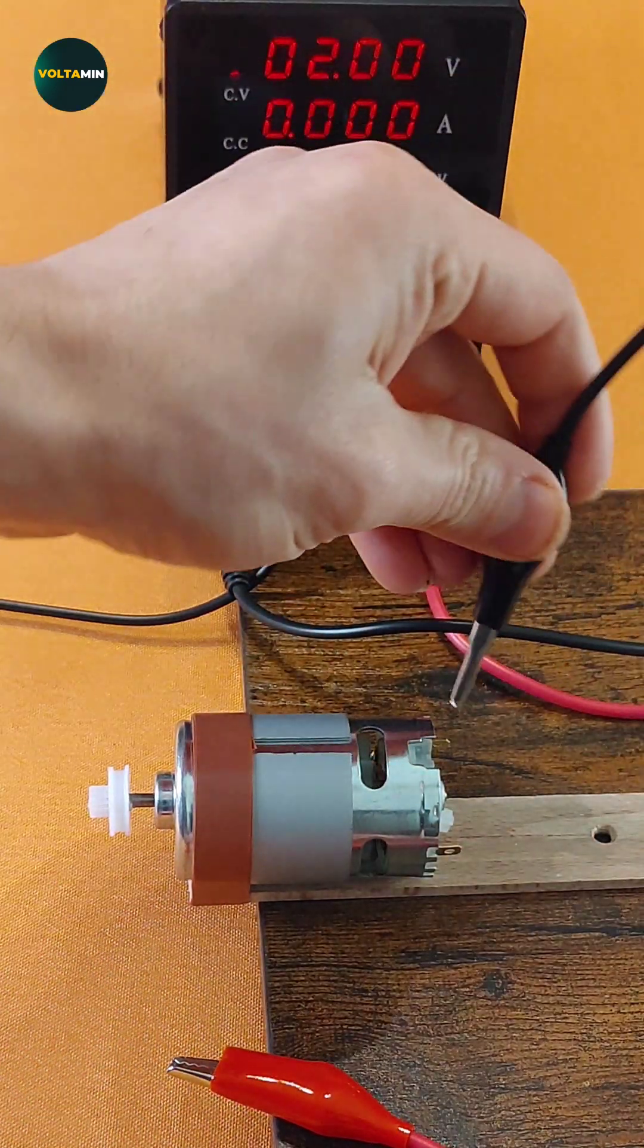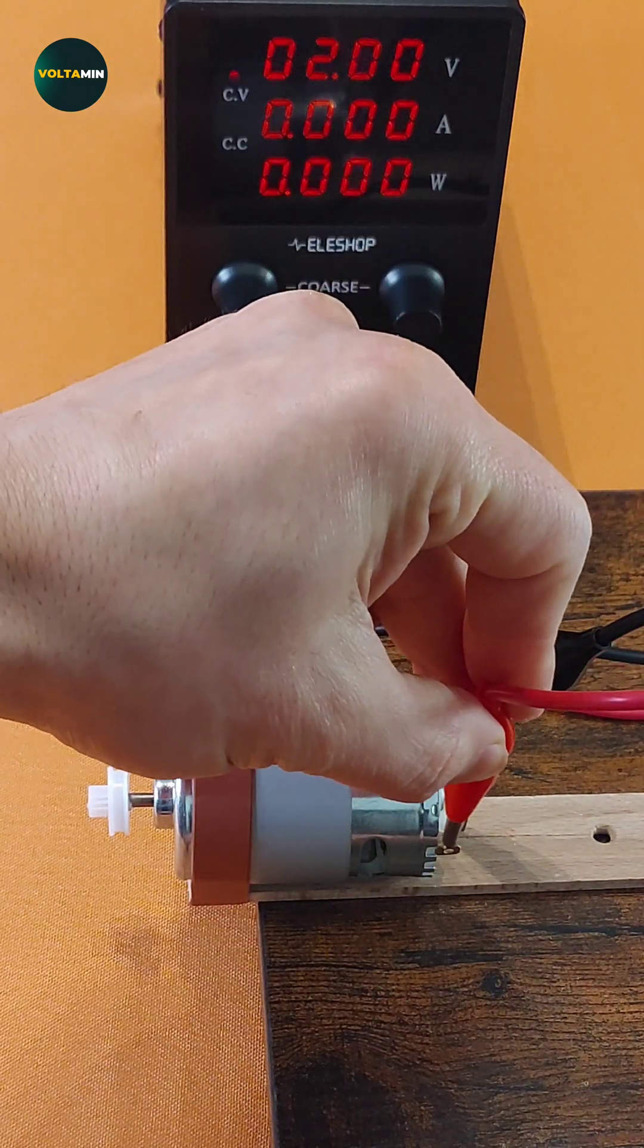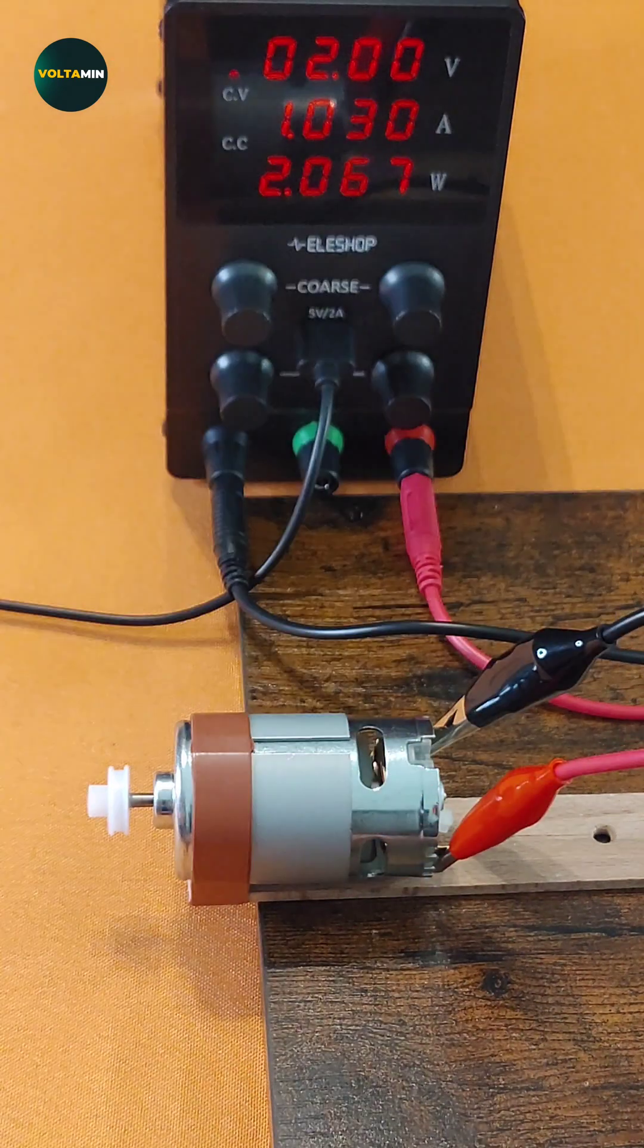Currently, the power supply is set to 2 volts. When I connect the alligator clips to the motor's terminals, it starts running slowly, drawing about 1 ampere of current.